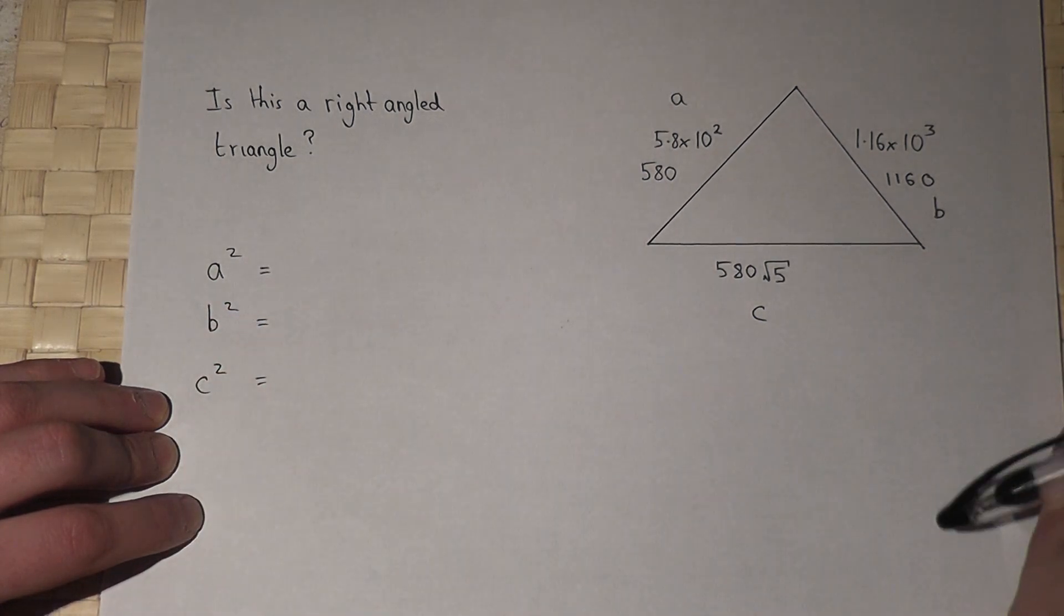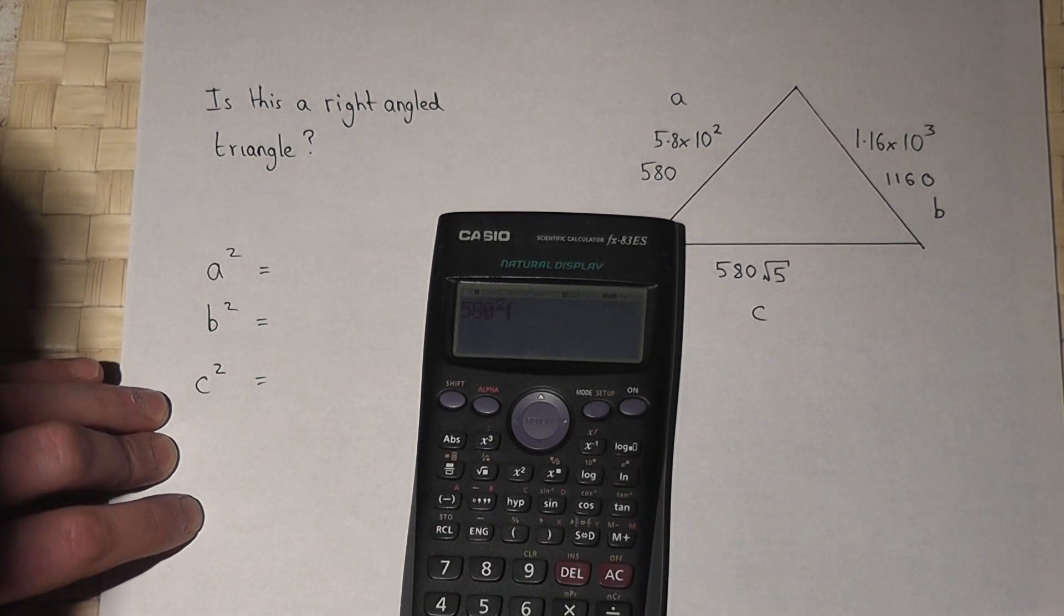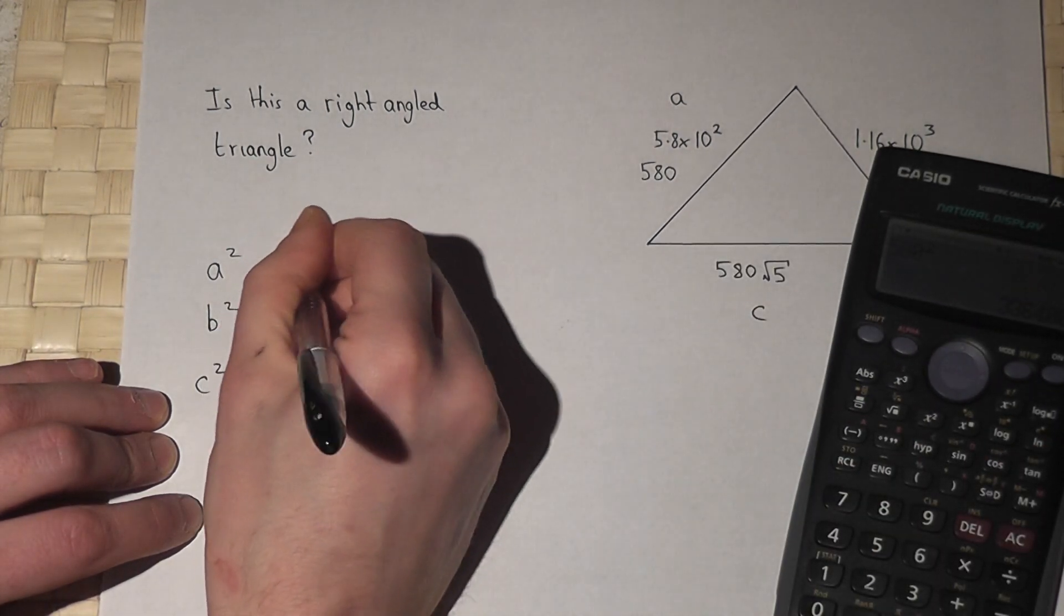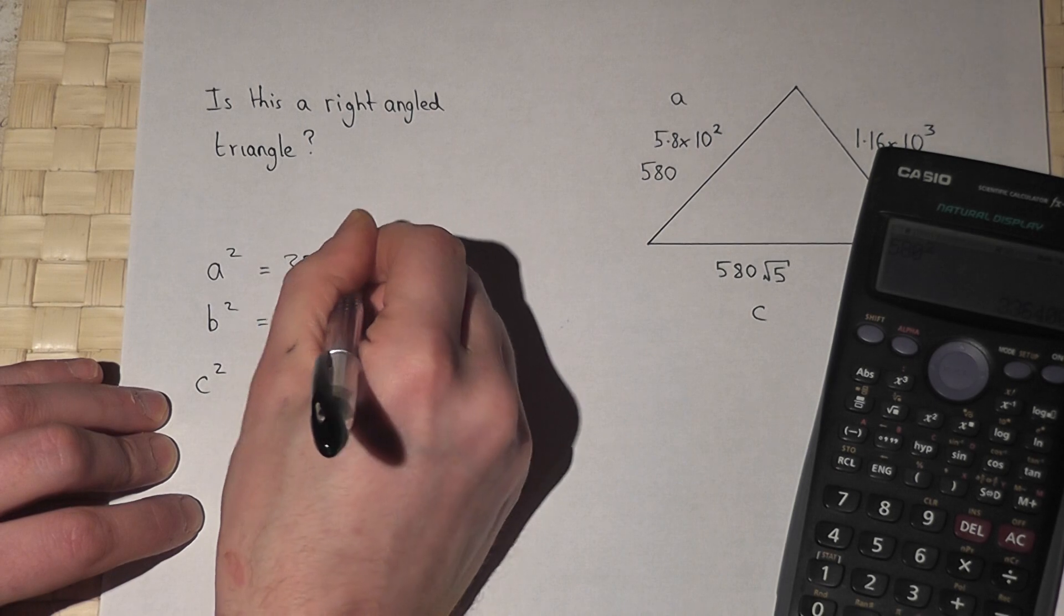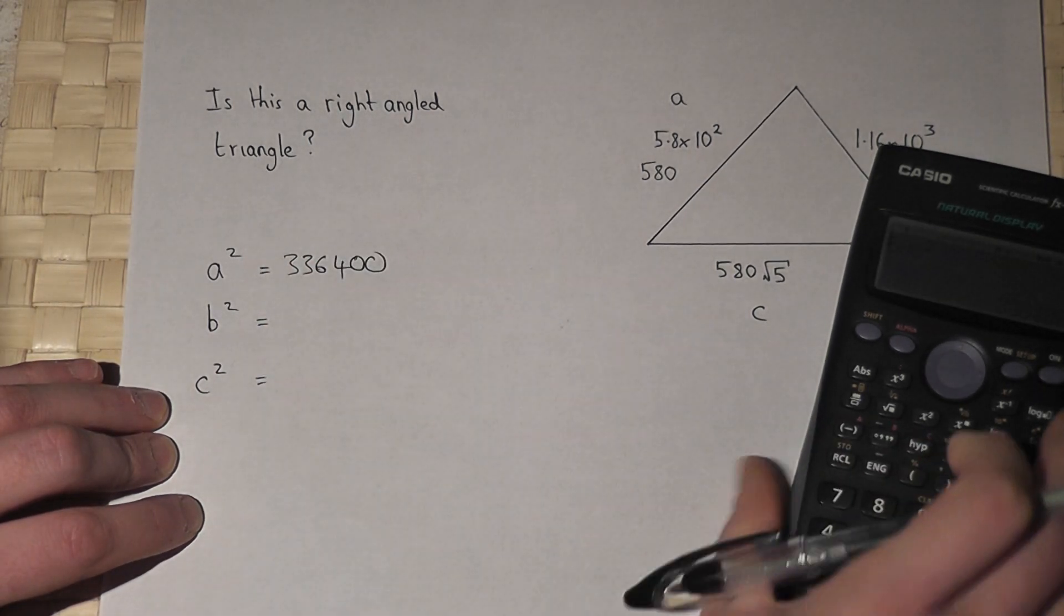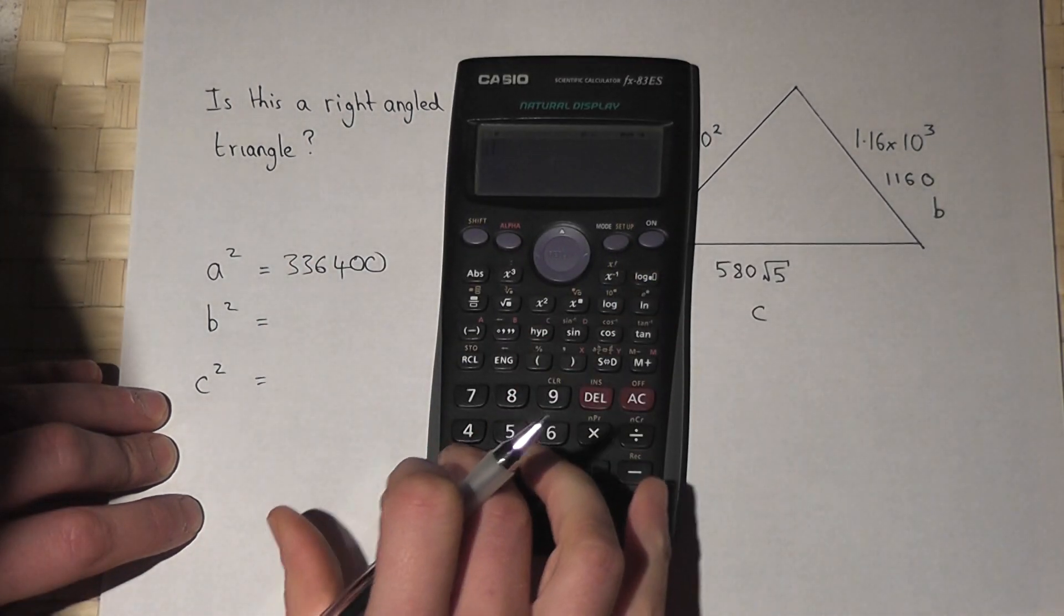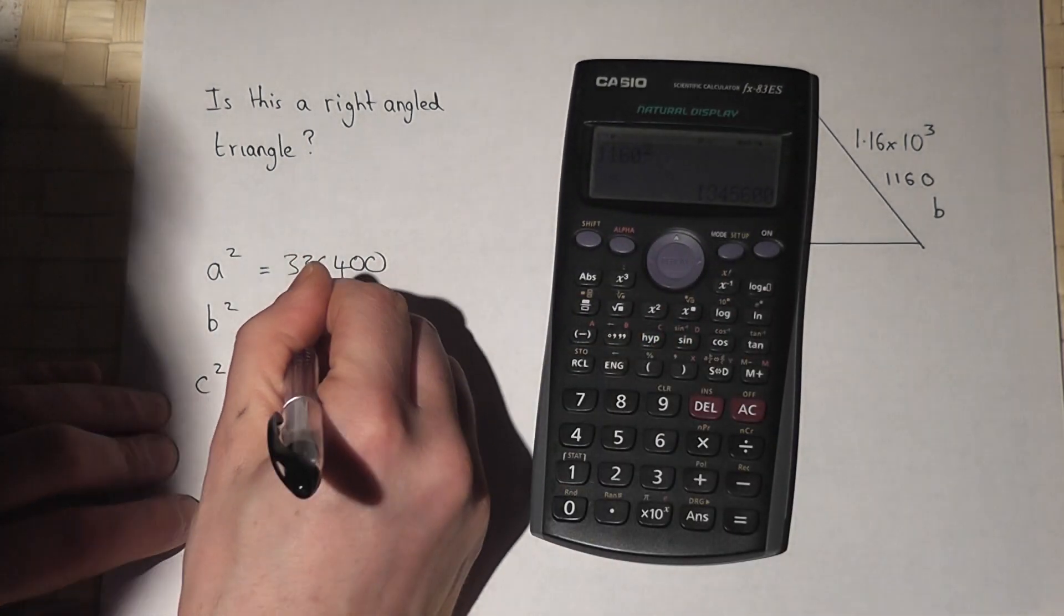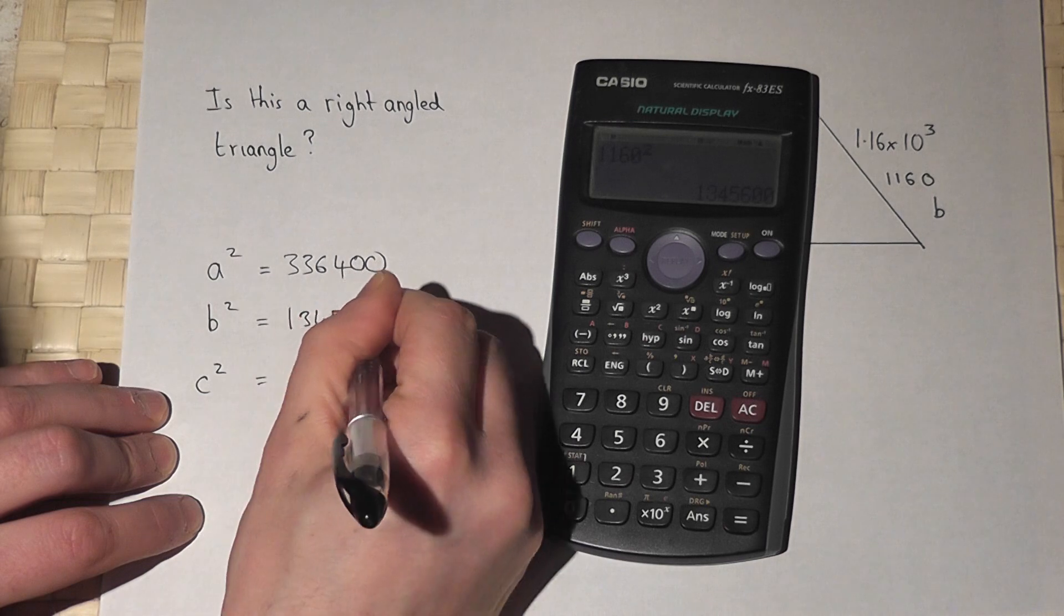Now then, 580 squared is 336,400. b squared, 1160 squared is 1,345,600.